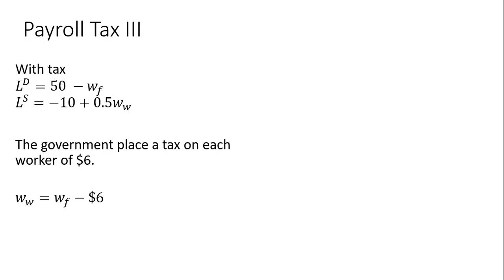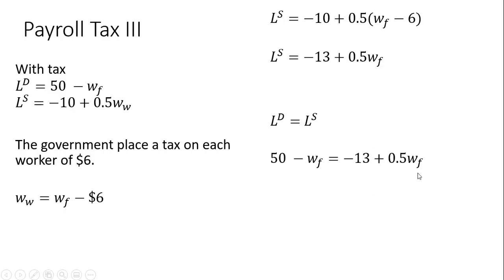From the workers' perspective, firms are going to pay them a wage of W_F, but then workers have to submit a $6 check to the government. So making our substitution into the labor supply equation of this W_F - 6 and simplifying, and setting labor demand equal to labor supply, collecting some terms here. Firms are going to pay $42.